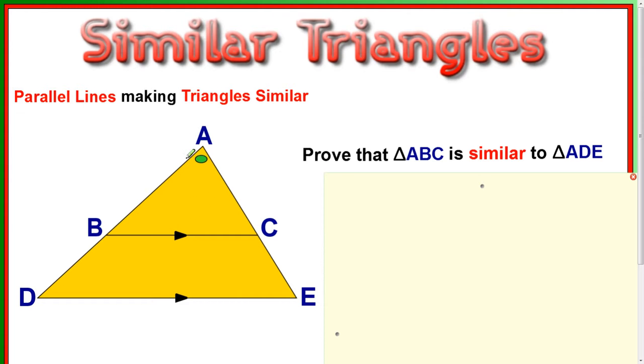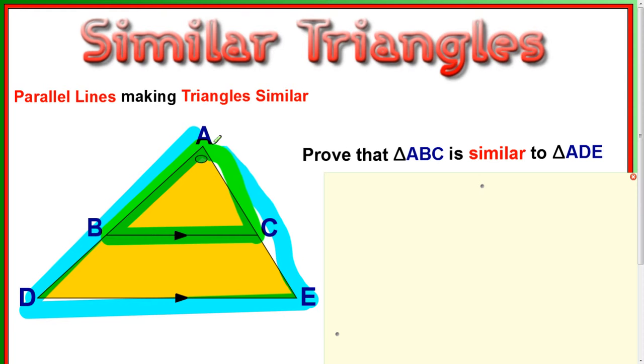So the first thing is to understand what triangles they are. Triangle ABC is that one, and triangle ADE starts there and goes all the way down and along, and then back up like that. So it's this big one compared to the smaller one there.